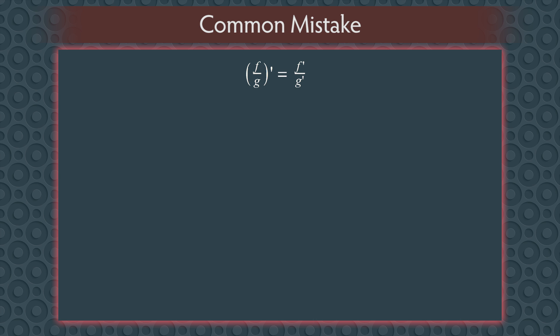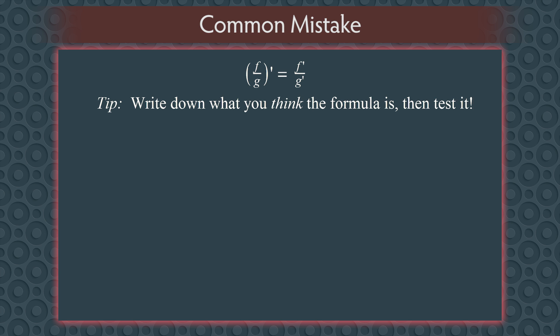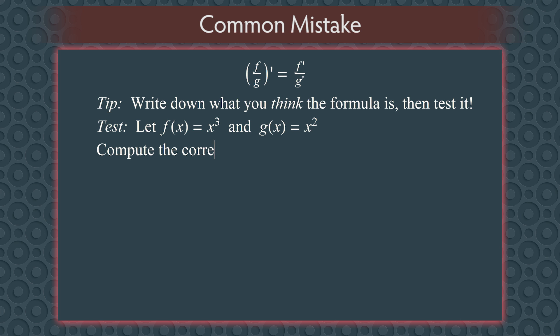I'd like to talk about a common mistake people make. Frequently people will say the derivative of f divided by g is f prime over g prime. You can see where it's tempting to make this mistake — our brains like things to be simple and often oversimplify. Here's how to avoid it: write down what you think the formula is, then test it. For our test, we'll let f of x equals x cubed and g of x equals x squared. Dividing f by g gives x cubed divided by x squared, which is x, so the derivative of f divided by g is 1. That's the correct answer.